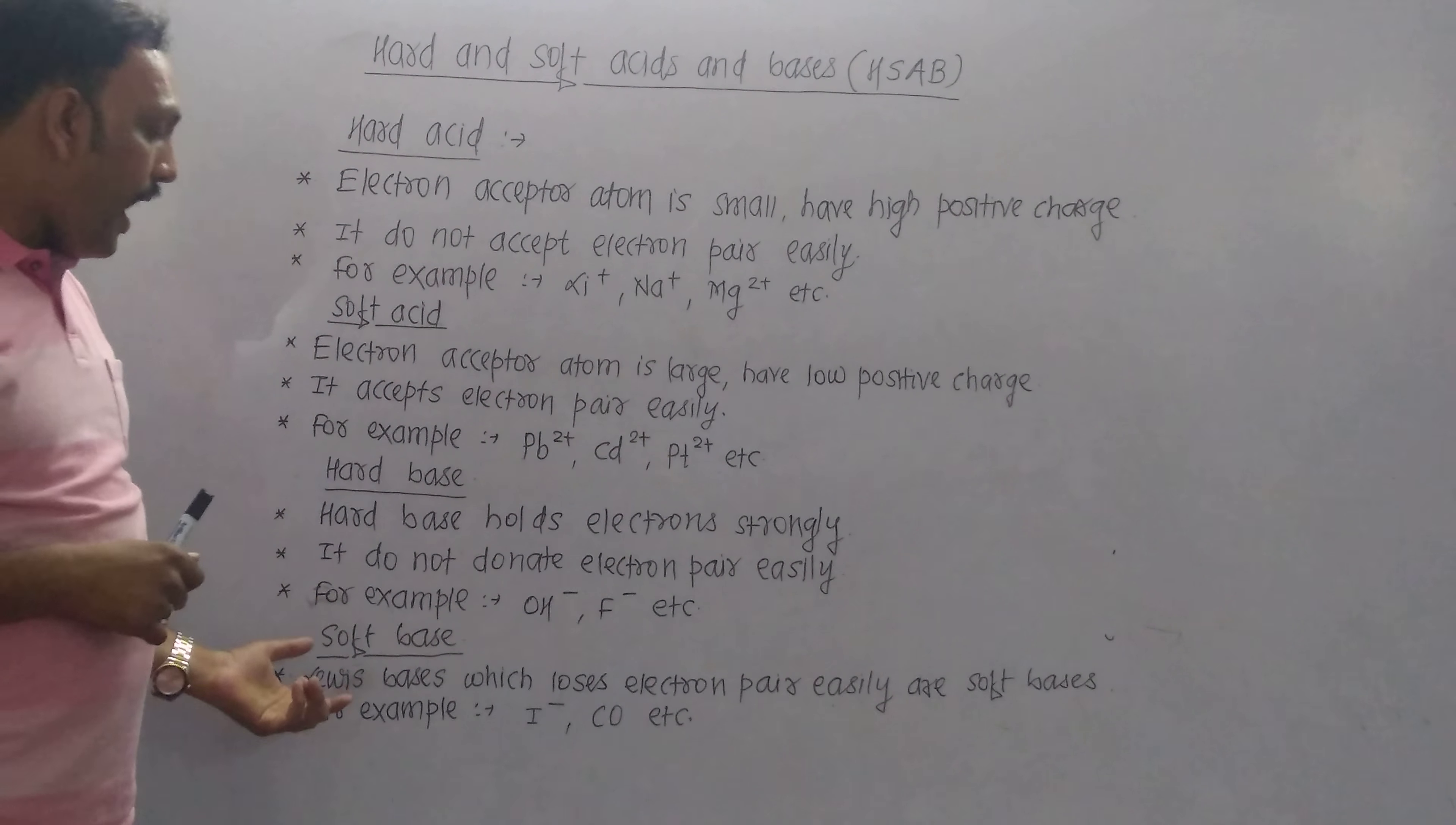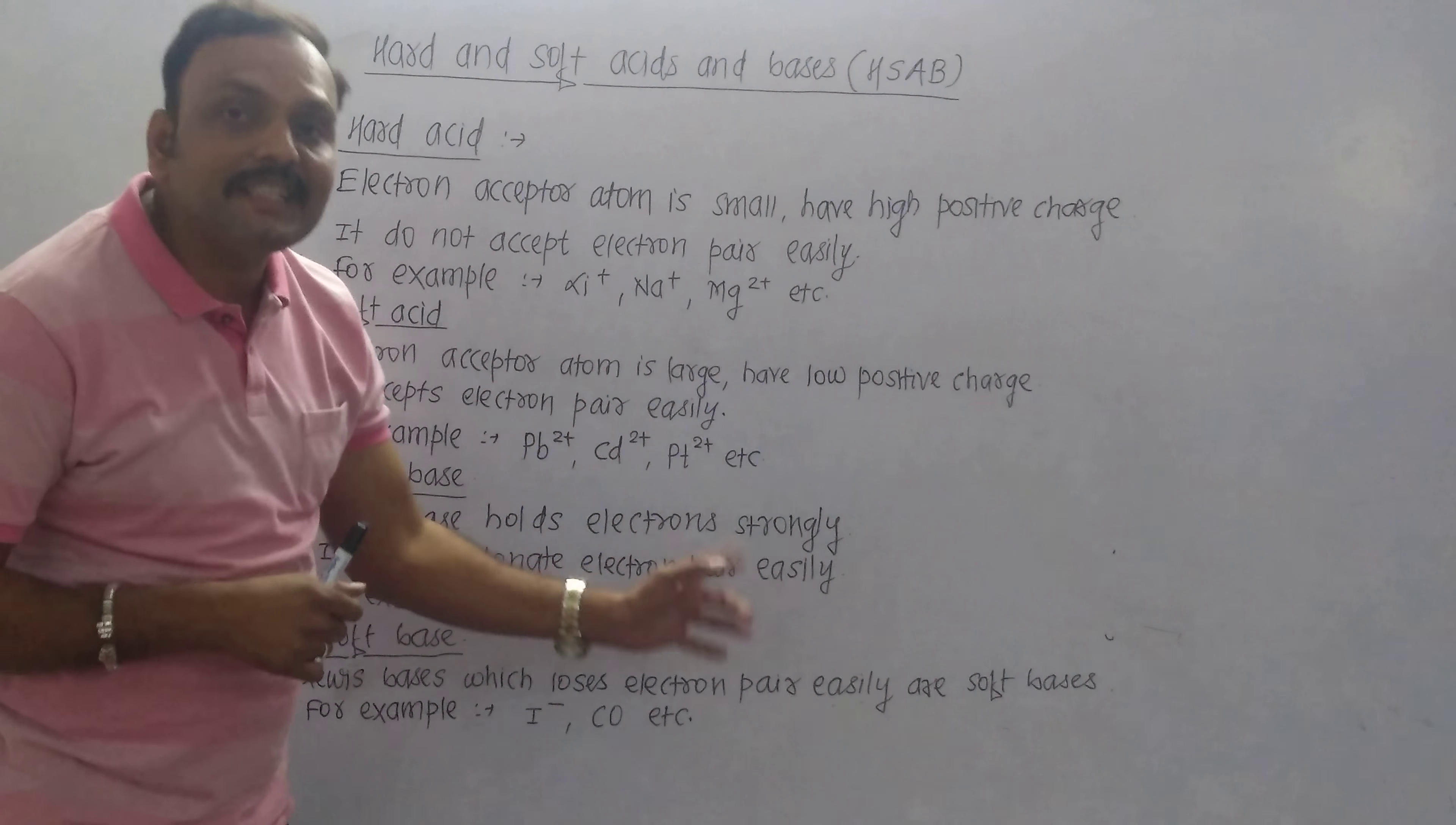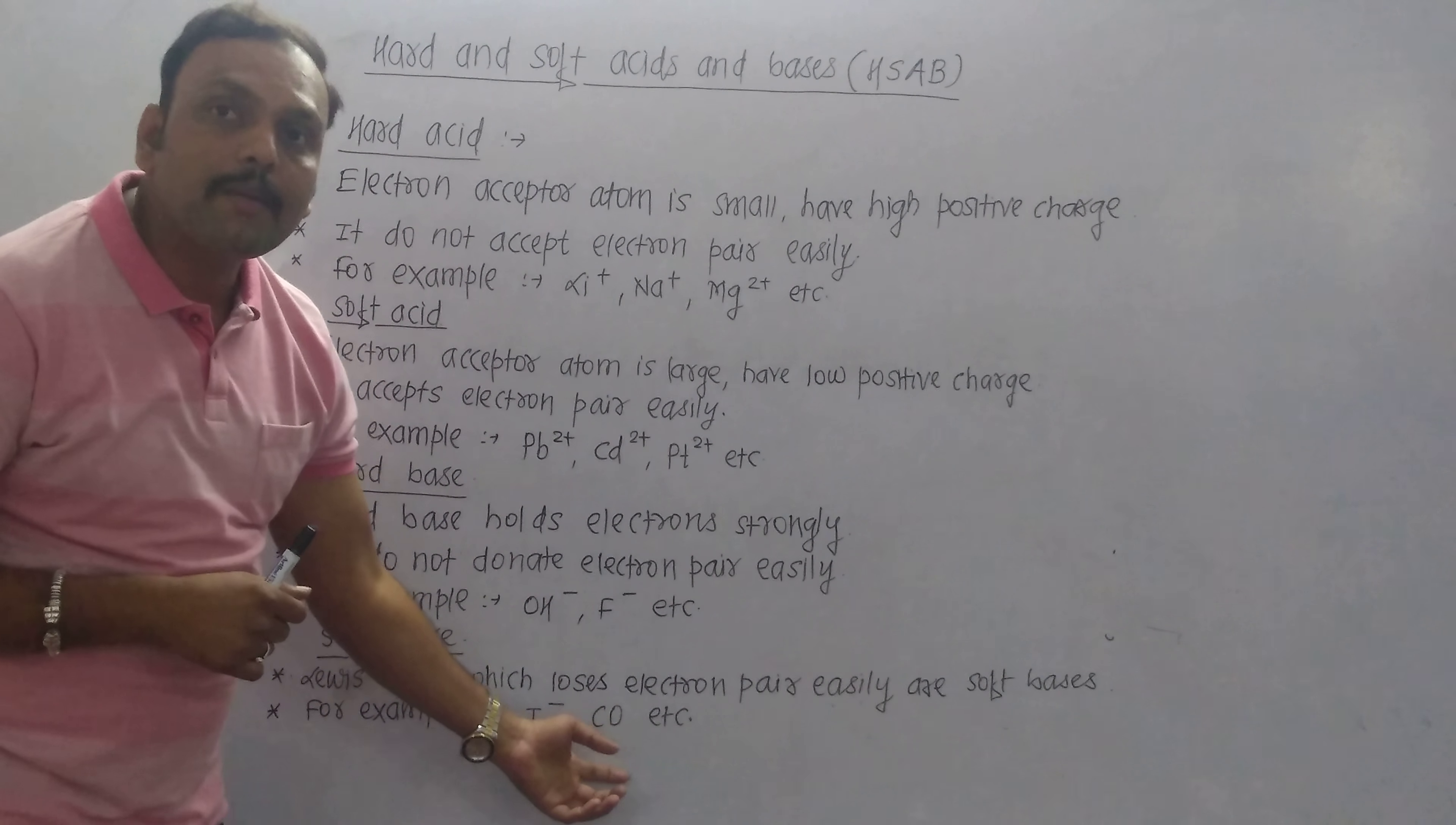Soft bases are species which lose electron pairs easily. Examples are I- and carbonyl ligands.